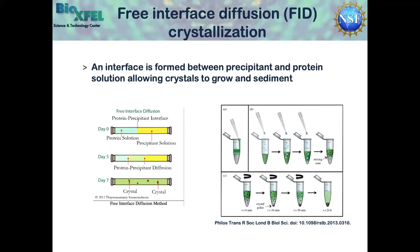If you set up a free interface diffusion experiment in a glass vial, you could throw in a very small stir bar and continuously stir your crystallization condition. That's actually what I ended up doing for the bulk of my thesis work, because it really helped limit the size of the crystals that grew. Without stirring, the crystals would just grow indefinitely in the micro centrifuge tube, which wasn't useful for us. So this is the free interface diffusion method, which is commonly used in the center.